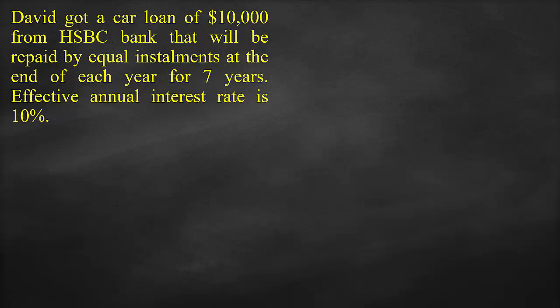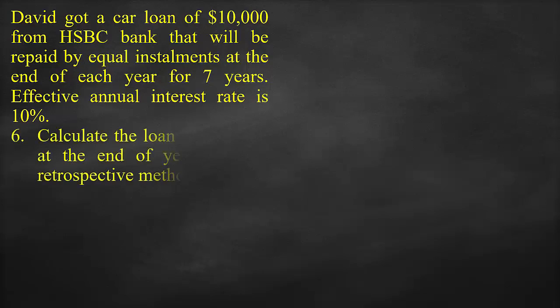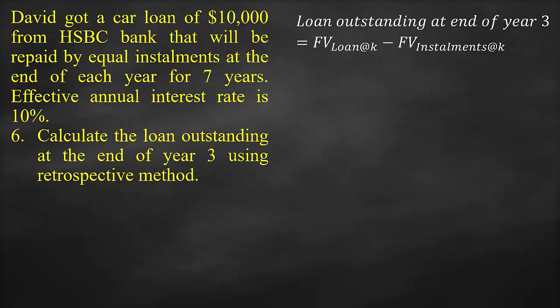The next part of the question is to calculate the loan outstanding at the end of year 3 using the retrospective method. The retrospective method formula is the future value of the loan minus the future value of the paid installments. We use the future value of a single cash flow for the loan, then subtract the future value of ordinary annuity for the paid periodic installments.